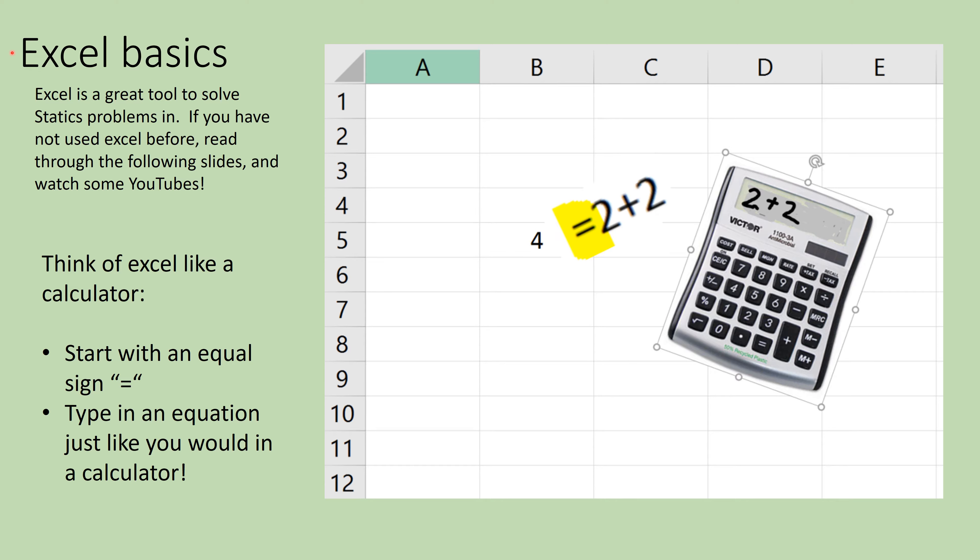You can think of Excel as just your calculator. You're going to click in any of these cells and start with an equal sign, and that equal sign will turn it into a calculator. You can type something into Excel just like you would type it into a regular calculator. So you say equals two plus two, enter, and that cell will then be filled with the number four.